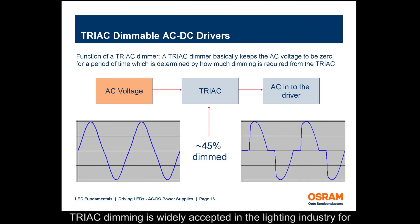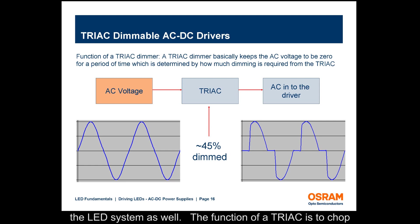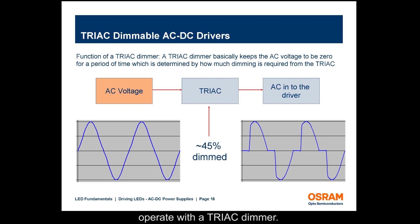TRIAC dimming is widely accepted in the lighting industry. When a traditional lighting source such as incandescent or fluorescent is replaced with an LED system, it is expected that the TRIAC dimmer should work with the LED system as well. The function of a TRIAC is to chop the AC voltage and keep it at zero for a period of time depending on the dimmer setting. When selecting an AC-DC driver for an LED system, be sure that the driver will operate with a TRIAC dimmer.